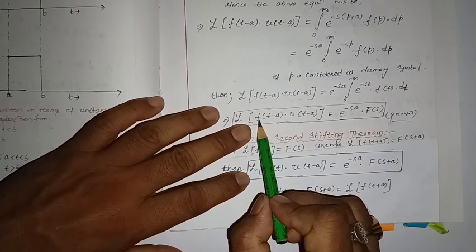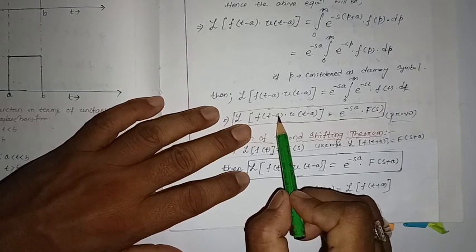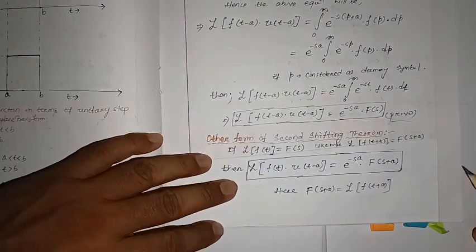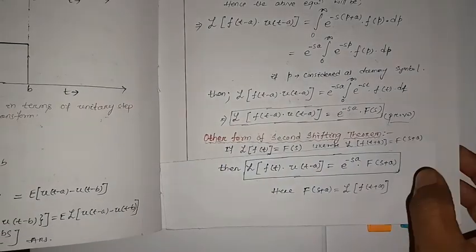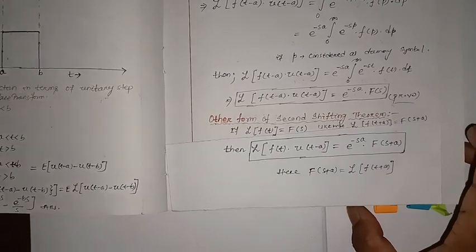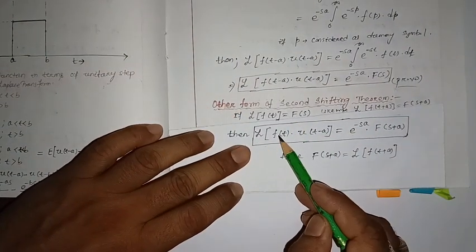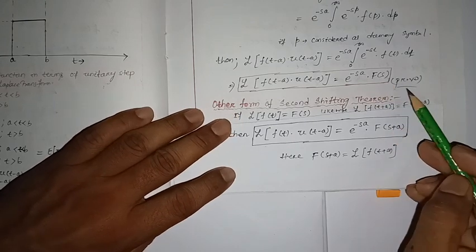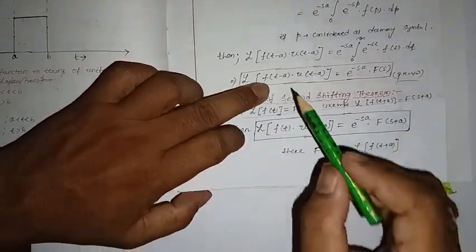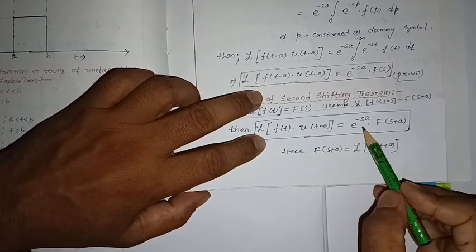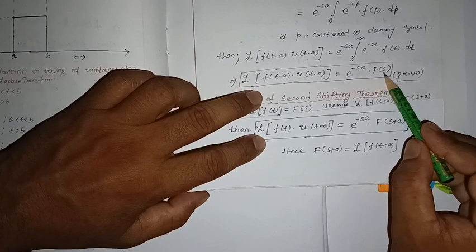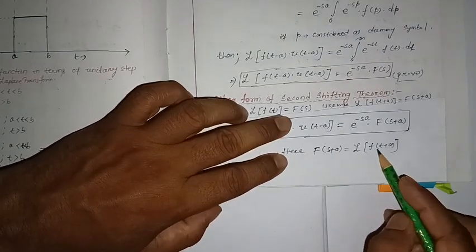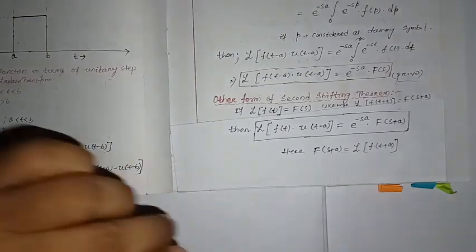The difference between these two forms: in the first, f(t minus a) appears and F(s) is used. In the second, f(t) appears and F(s plus a) is used. Here, if we write t minus a plus a, then s plus a appears. You just need to remember: Laplace transform of f(t minus a) u(t minus a) equals e to the minus sa into F(s).